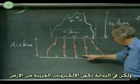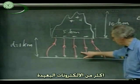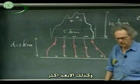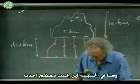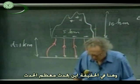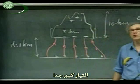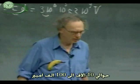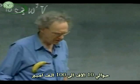First the electrons closer to the earth go, then the electrons farther away, and then even farther away. And this is actually where most of the action occurs. The current is now enormously high — 10,000 to some 100,000 amperes.